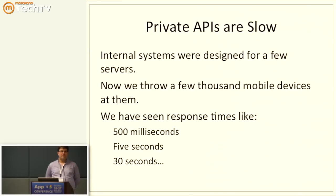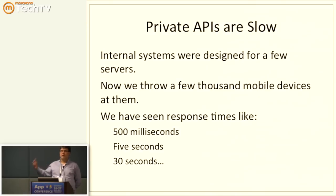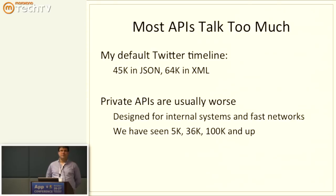500 milliseconds is sometimes a good response time. We've seen APIs that take 30 seconds to respond. And it's awfully hard for a mobile developer to build a usable app if, when they open up the app and it tries to load the home screen, one API call takes 30 seconds — and if, as Daniel described, sometimes you make five or six calls, now you're in a lot of trouble.